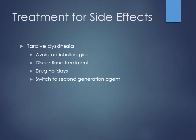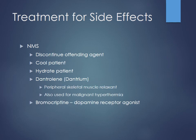For tardive dyskinesia, the issue is dopamine receptor hypersensitivity — not blockade — so you cannot treat it with an anticholinergic; that would actually make it worse. You must determine whether the patient has acute dystonia/dyskinesia or tardive dyskinesia based largely on duration of use. For patients who've been on a typical agent for years, it's more likely tardive dyskinesia. Options include discontinuing therapy to prevent worsening, or 'drug holidays.' The second-generation agents largely circumvent this problem, and tardive dyskinesia risk is much lower.